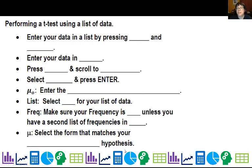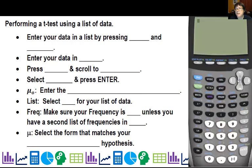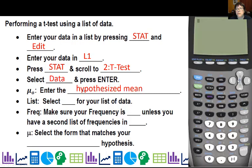All right, so performing a t-test using a list of data. How do we get these p-values? Well, you can enter your data in a list by pressing STAT, and I'm going to go ahead and fill these in. And then EDIT, and your data in list one, STAT, and scroll to t-test. Make sure we put in data. You're going to be prompted for the hypothesized mean, which list your data is in, frequency almost always one—almost always one, I've never—occasionally you could have a list of frequencies. And then for mu, that doesn't mean what is the mean—it wants to know what your alternate hypothesis is.